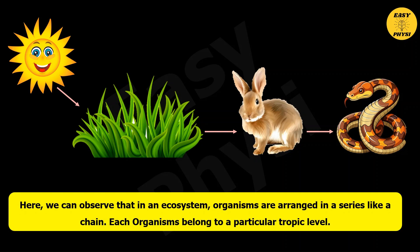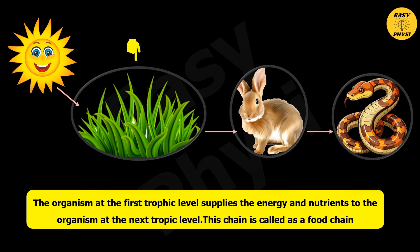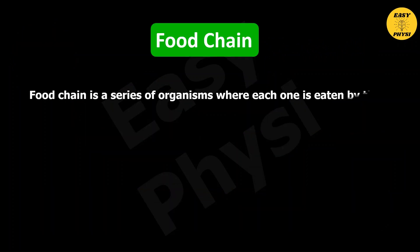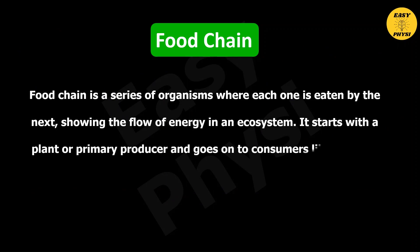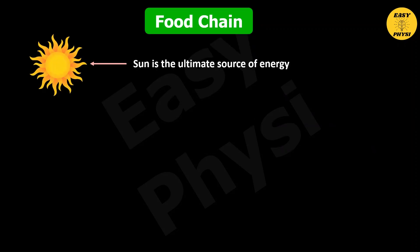Each organism belongs to a particular trophic level. The organisms at the first trophic level supply energy and nutrients to the organisms at the next trophic level. This chain is called a food chain. It is a series of organisms where each one is eaten by the next, showing the flow of energy in an ecosystem. It starts with a plant or primary producer and goes on to consumers like animals.